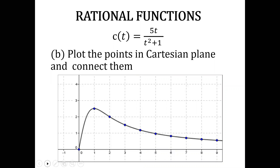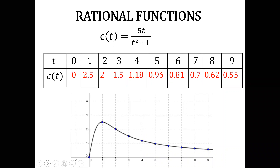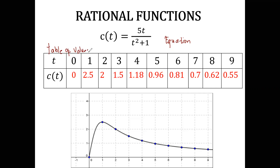The third question asks: what can you say about the function? Here you can see the three different representations of the function. The first is the equation: c(t) = 5t over t² + 1. The second is the table of values, and the last is the graph.